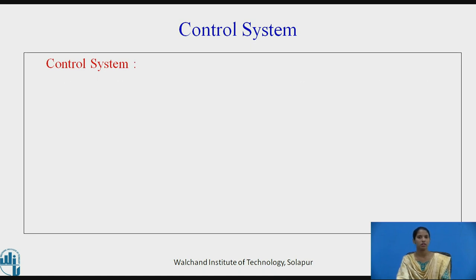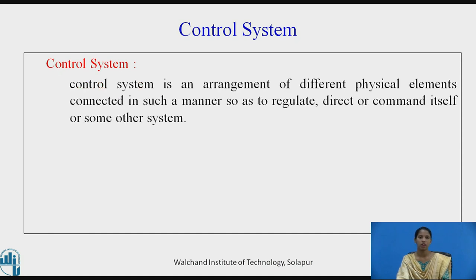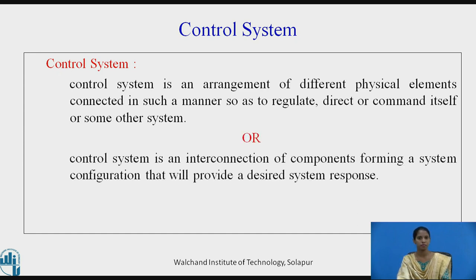Let us define control system. As we have discussed earlier, a control system is an arrangement of different physical components in such a manner so as to regulate, direct or command itself or some other system. It can also be defined as an interconnection of components forming a system configuration that will provide a desired system response.